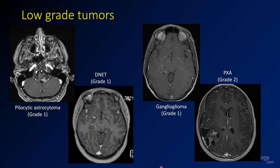To summarize these less common low-grade tumors: the pilocytic astrocytoma was a posterior fossa lesion with cystic components and an enhancing nodule. The DNET was a peripheral cortical-based lesion, cystic and bubbly appearing, with not much enhancement. The ganglioglioma had a little bit more enhancement but a similar cystic appearance and cortical location. Finally, the pleomorphic xanthroastrocytoma was a bigger lesion with avid enhancement of solid components, multiple cystic components, and a dural tail.